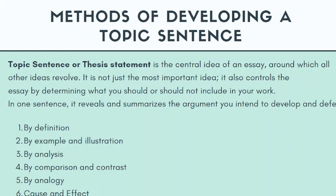However, in more recent writings, the topic sentence is not always the first sentence. Sometimes a thesis statement is implicit — meaning it is not directly visible, and it is up to the reader to identify the main idea across various sentences. We have six methods: by definition, by example and illustration, by analysis, by comparison and contrast, by analogy, and by cause and effect.